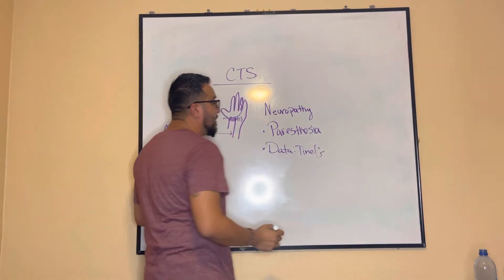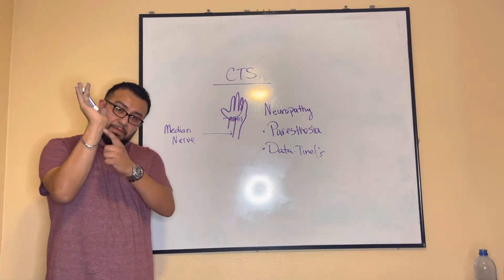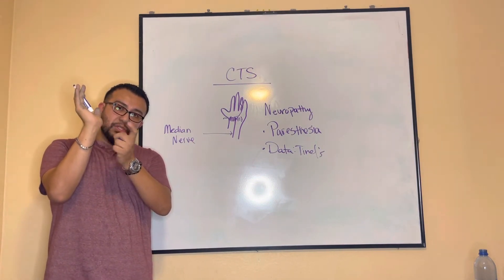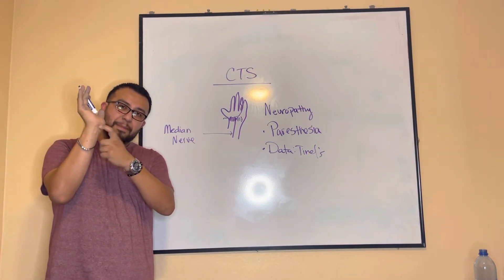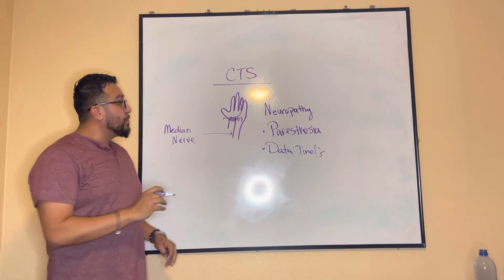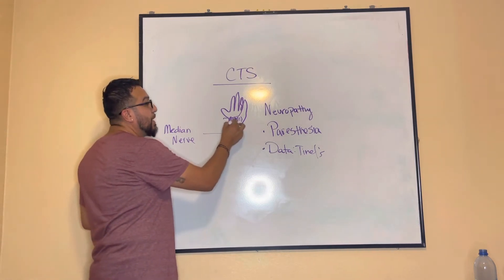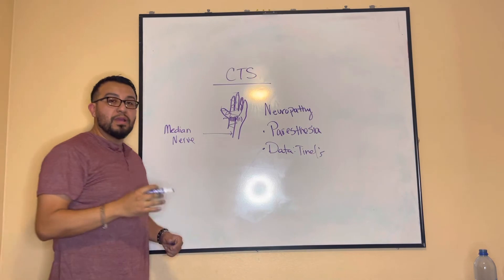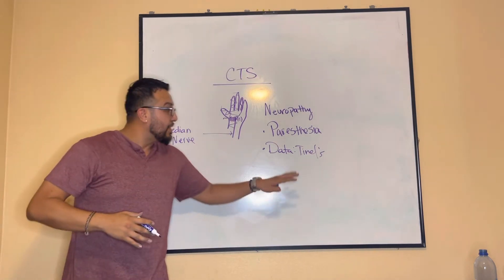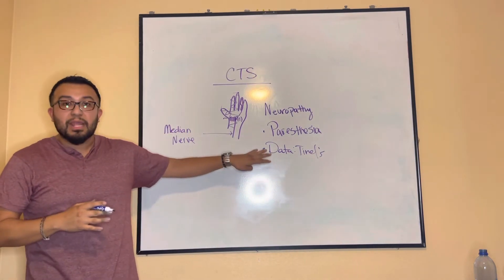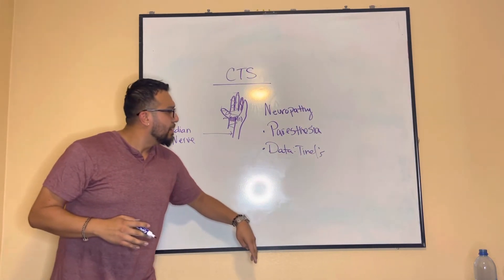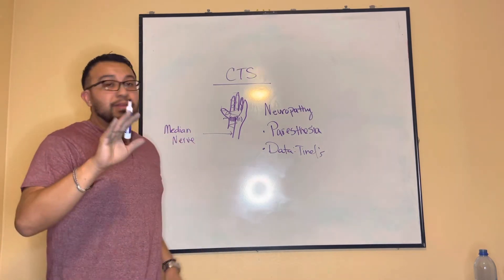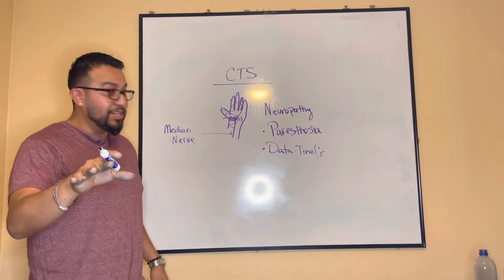The tunnel sign is when you locate the median nerve and, as a nurse, you tap on the base of the palm. The patient will then experience paresthesia and numbness to those affected digits, and that's how we know the patient most likely has a positive tunnel sign.